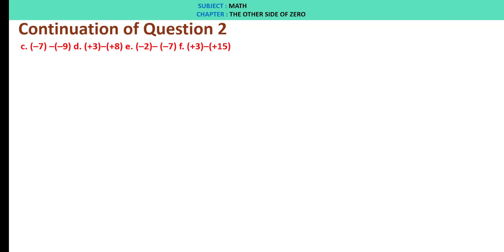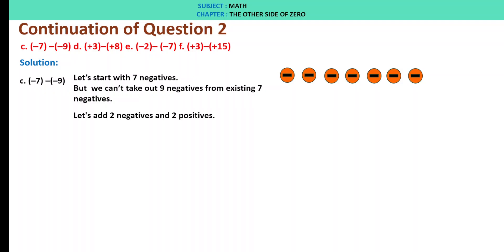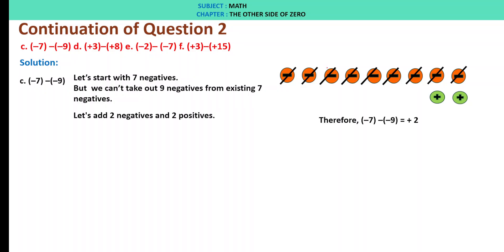C: minus 7 minus of minus 9. Let's start with 7 negatives. We can't take out 9 negatives from existing 7 negatives. So let's add 2 negatives and 2 positives. Now let's take out 9 negatives. We are left with 2 positives. Therefore, minus 7 minus of minus 9 is plus 2.